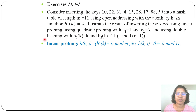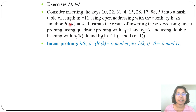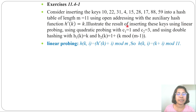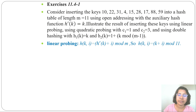Let's solve one question for all open addressing techniques: linear probing, quadratic probing, and double hashing. This question is from the Cormen book, exercise 11.4-1. Consider inserting the keys 10, 22, 31, 4, 15, 28, 17, 88, 59 into a hash table of length m equals 11, using open addressing with auxiliary hash function h'(k) equals k. We illustrate using linear probing, quadratic probing with c1=1 and c2=3, and double hashing with h1(k)=k and h2(k)=1 + k mod (m-1).